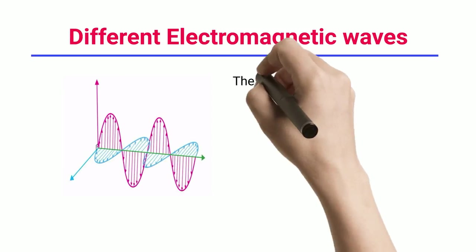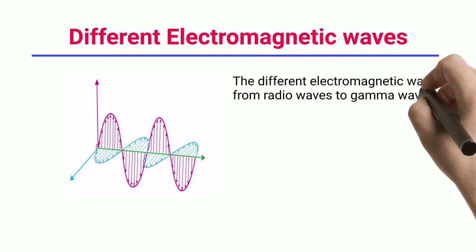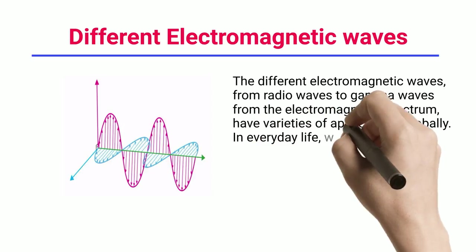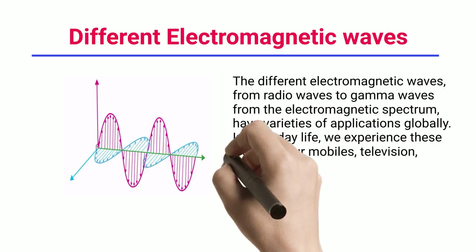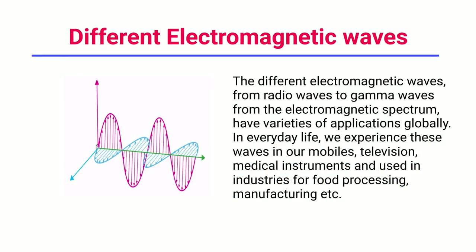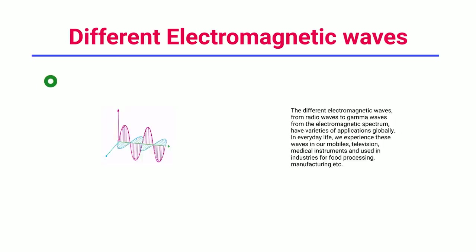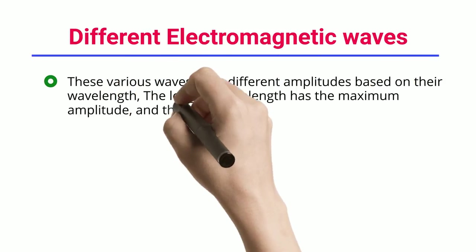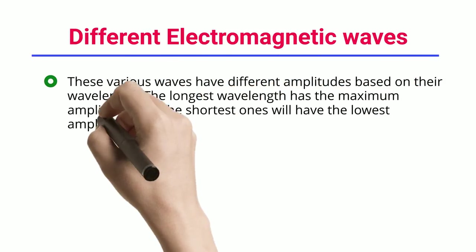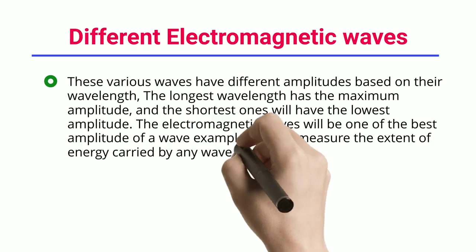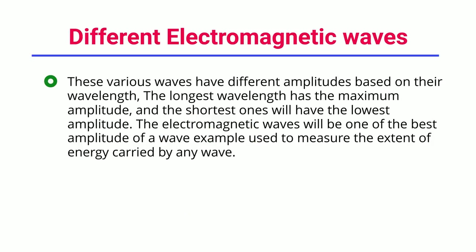Different Electromagnetic Waves: The different electromagnetic waves, from radio waves to gamma waves in the electromagnetic spectrum, have varieties of applications globally. In everyday life, we experience these waves in our mobiles, television, medical instruments, and industries for food processing, manufacturing, etc. These various waves have different amplitudes based on their wavelength — the longest wavelength has the maximum amplitude, and the shortest ones will have the lowest amplitude. Electromagnetic waves are one of the best amplitude of a wave examples used to measure the extent of energy carried by any wave.